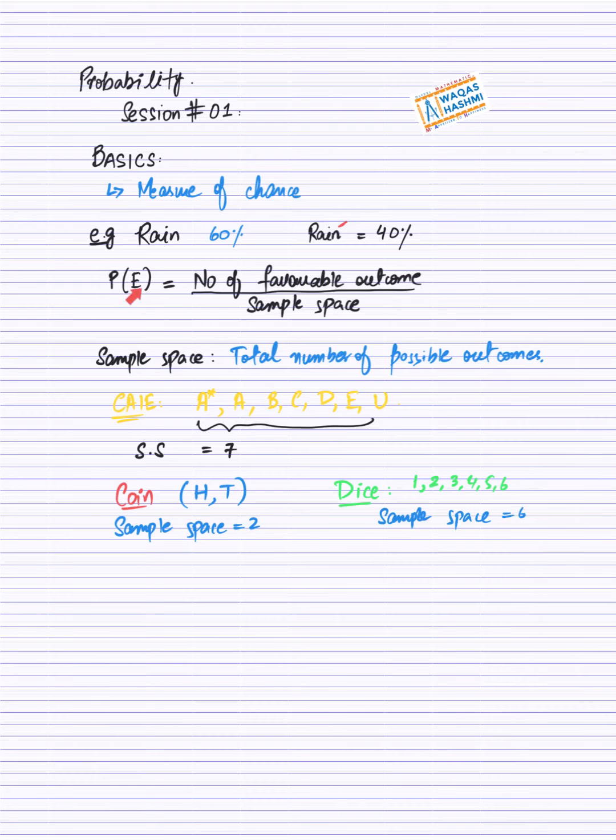Toh probability ke formulae me, hame sample space samajh me aa gya, iska matlab hota hai, total number of possible outcomes, jo ke aasakta hai. Ab CIE me kisiki ka result T thodi aayega, kisiki ka result G thodi aayega. Toh jo aasakta hai, voh aapke paas sample space hai. Coin me head aayega, ya tail aayega, aisa thodi koi aur outcome aajaye, possible nahi. Toh sample space aapke paas two hota hai.